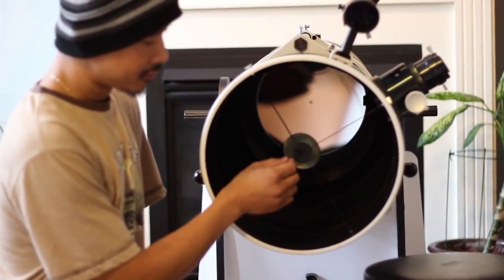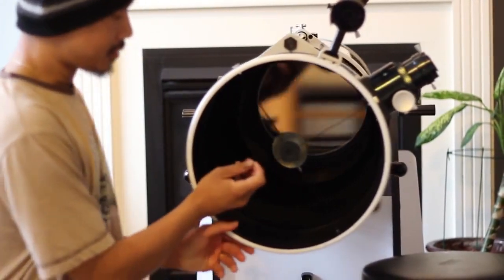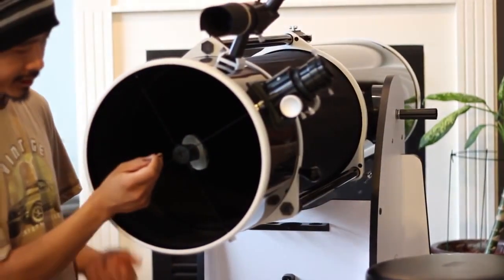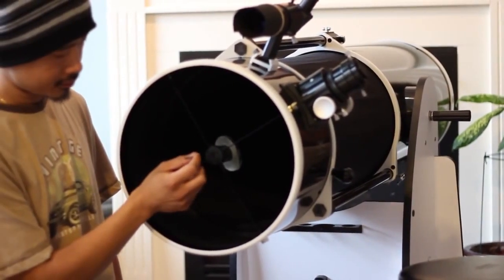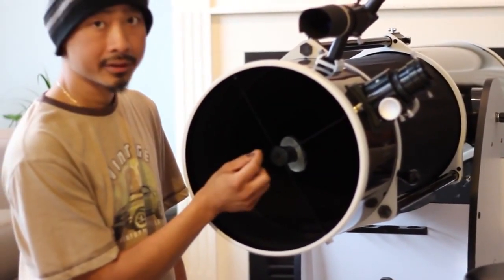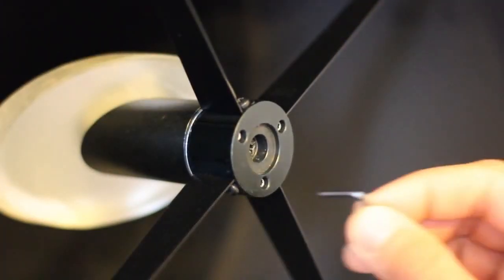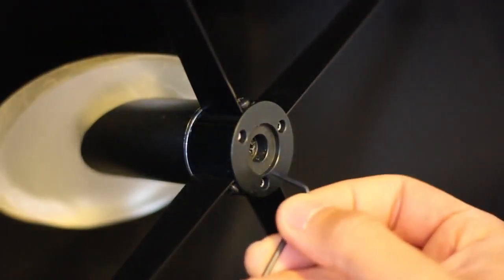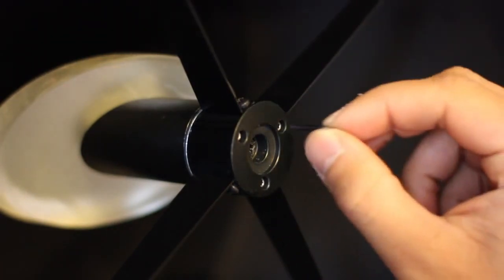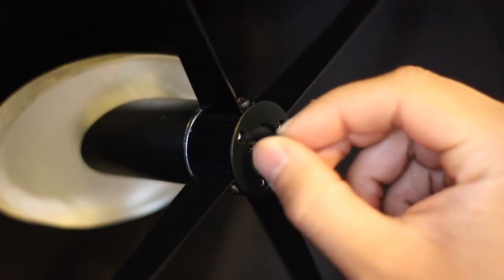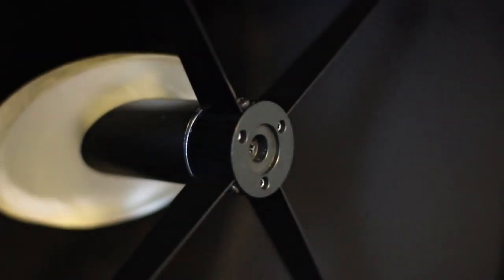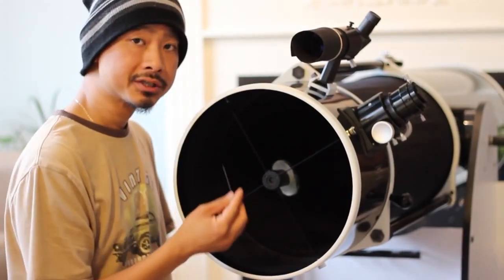So when I tighten these screws, it's actually going to push the secondary towards the primary mirror but only at a certain angle. And every time you make these adjustments, you look through your focuser with the collimator cap still inside so that you're only in one confined area. And then once you can see all of the clips, the three clips of the primary mirror visible through the secondary, that means you're already in alignment.